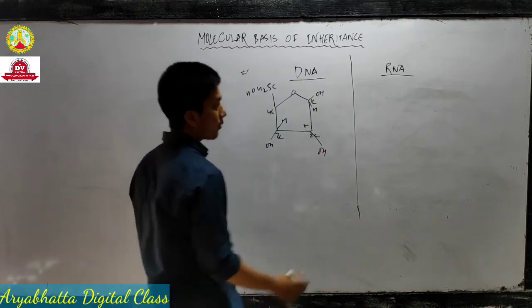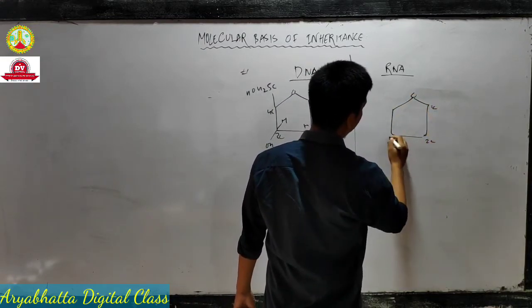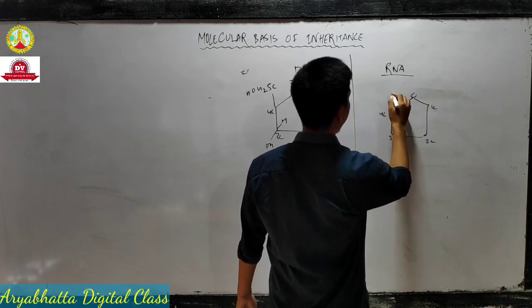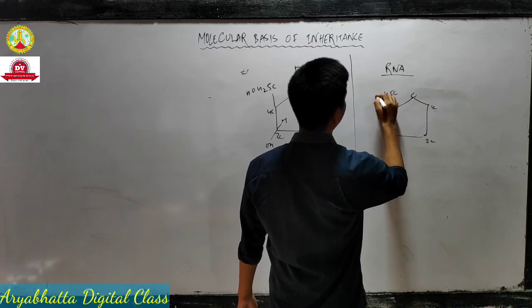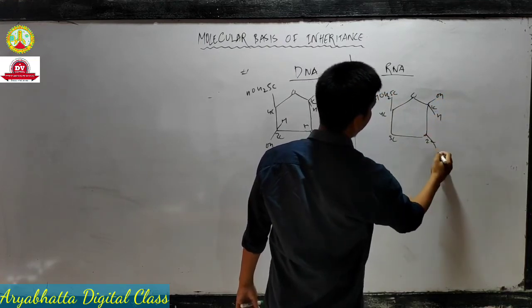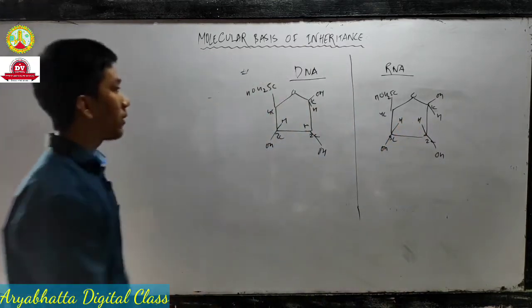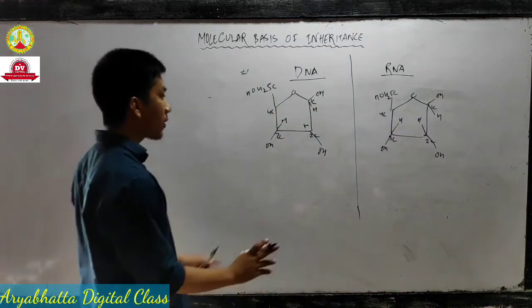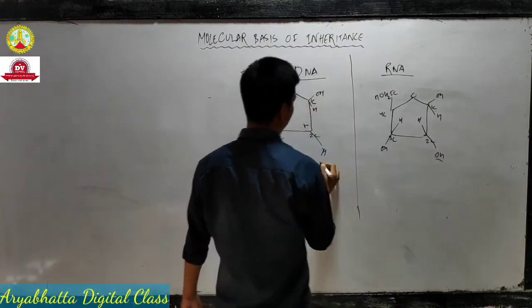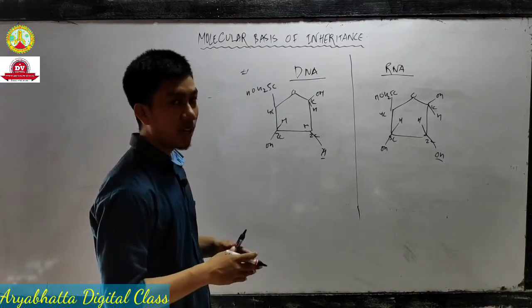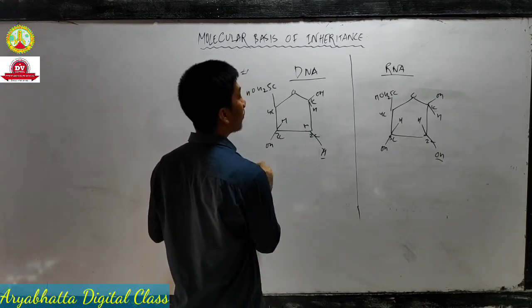This is the structure of DNA we have already seen, and this is the structure of RNA. The key difference is that in the case of DNA, at the 2' carbon number, the OH is replaced with a single H. Now, DNA is the genetic material of humans.